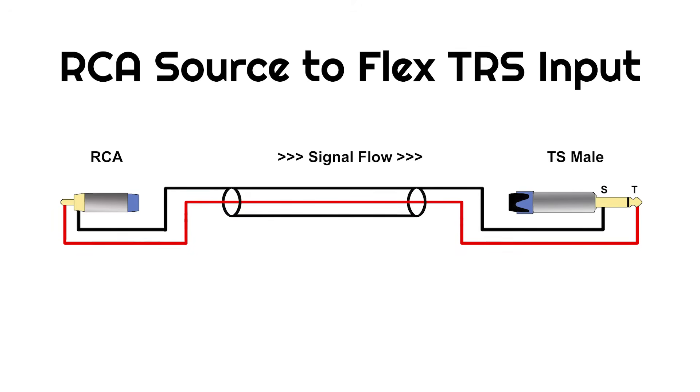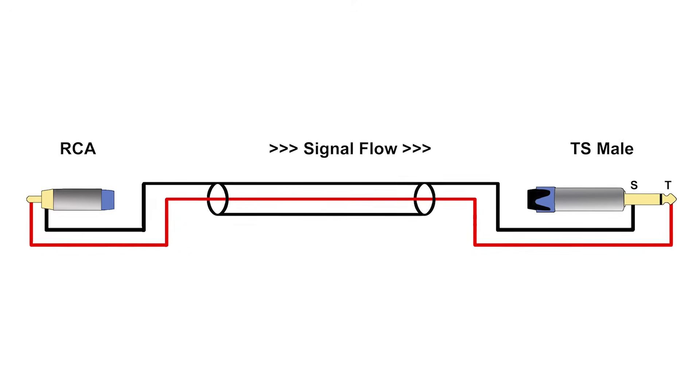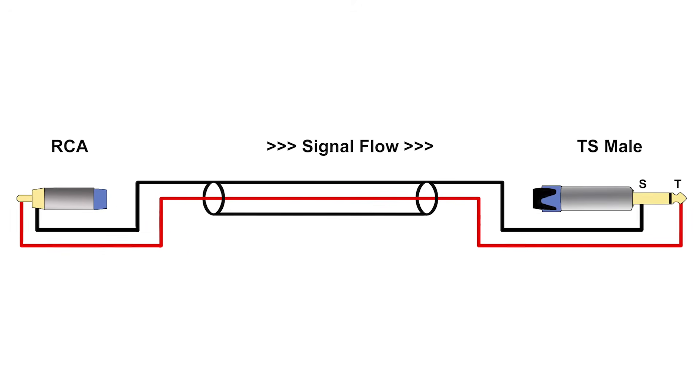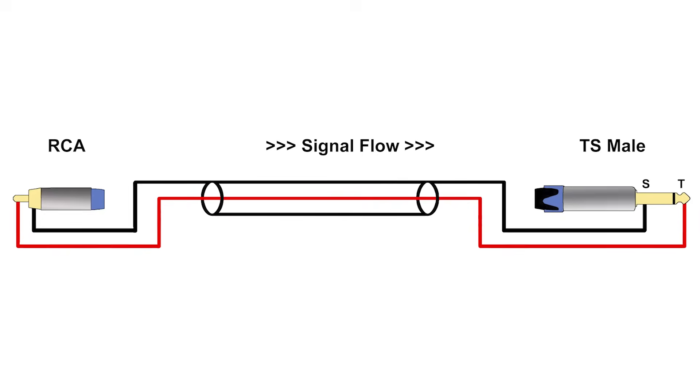When connecting a single-ended RCA source to the Flex TRS, such as a phono preamp, you'll need to maintain proper shielding and grounding. For this, you'll need to use an RCA to TS cable.